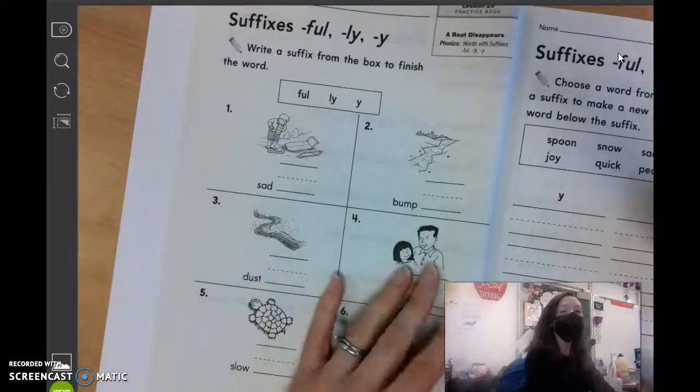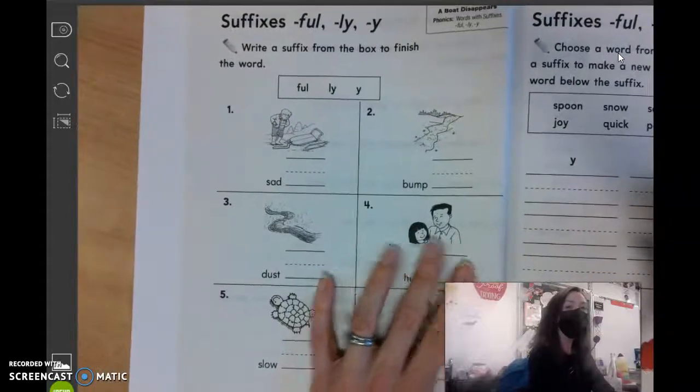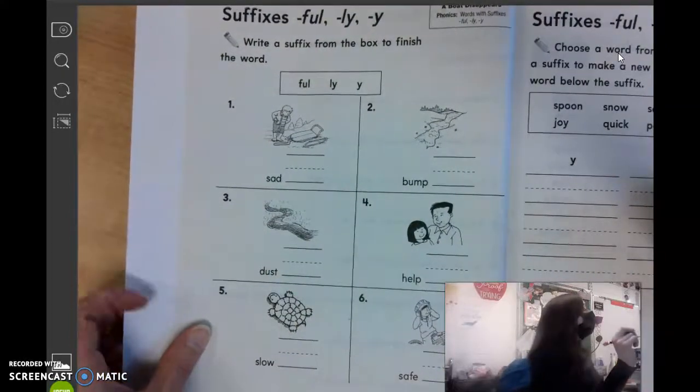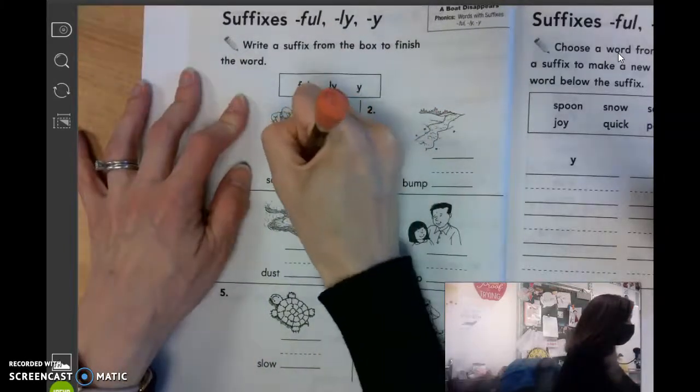Number one, we have the word sad. What suffix do we add to the word? Amelia? Lee, L-Y, sadly, just like this spelling word.